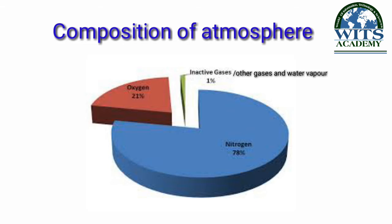Atmosphere mein bahut si gases ek khas tanasub mein maujood hoti hain, jismein 78% nitrogen, 21% oxygen aur 1% other gases aur water vapor shamil hote hain. Water vapor ki presence yahan isliye ahmiyat rakhti hai, kyunki yeh badlon ke banne aur barish hone mein bahut madadgar sabit hoti hai.